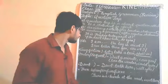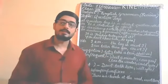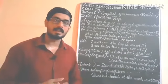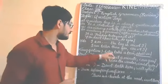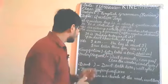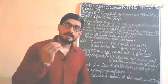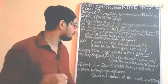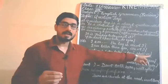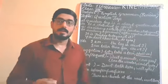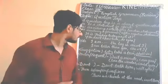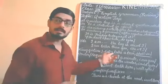If you are getting a suggestion in a sentence and the sentence starts with 'let's' or 'let us' — for example, 'Let's take a taxi' — we will use 'shall we' as the question tag. When the sentence starts with 'let us', the question tag will be 'shall we'.